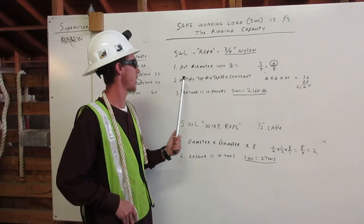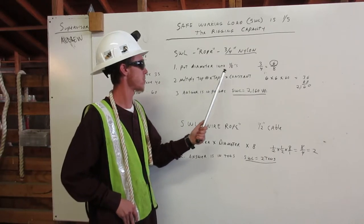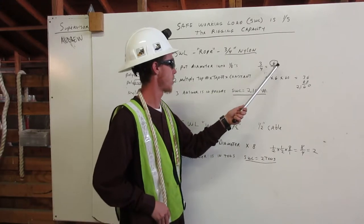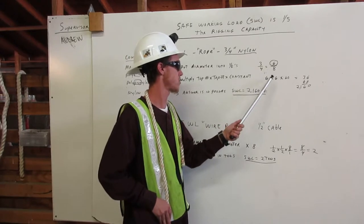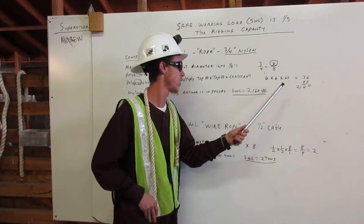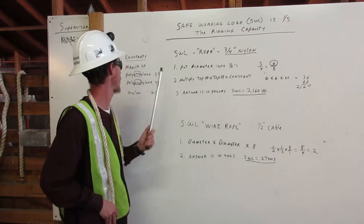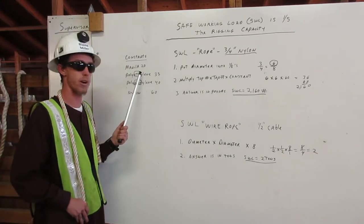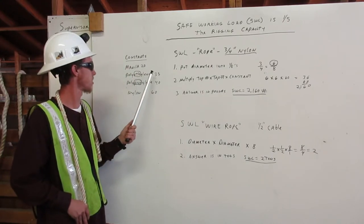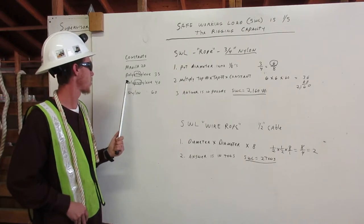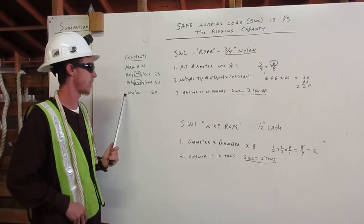Second, we are going to multiply the top number times top number times constant. So the top number is the six. So six times six times sixty. We get the sixty from the constants over here. Manila is twenty, polyethylene is thirty-five, polypropylene is forty, nylon is sixty.